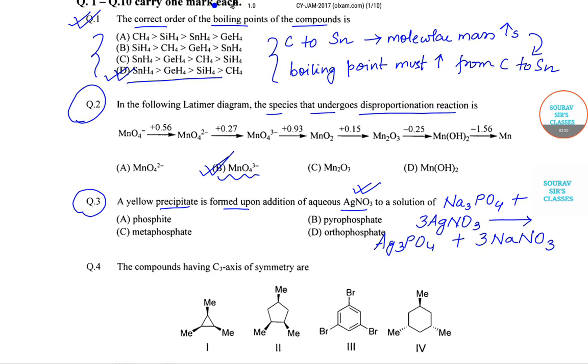So the net ionic reaction becomes PO4^3- plus Ag^+ gives Ag3PO4. Okay, now you must remember that if sodium orthophosphate is dissolved in...